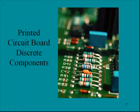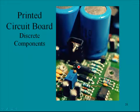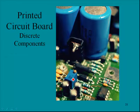Here is a picture of discrete components mounted on a circuit board. In another picture, we can see capacitors, resistors, a small IC, a diode, a variable potentiometer, and additional capacitors — all discrete components on a printed circuit board.